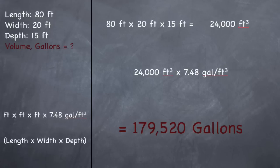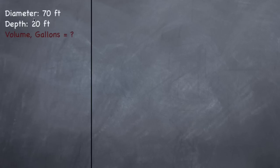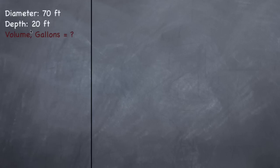Now let's do volume for a circle, like a clarifier. Anytime you see the word diameter or circumference, those are indicators of a circle. They've given a diameter of 70 feet — that's the length from one point of the circle all the way to the directly opposite point, essentially cutting the circle in half. It's operated at a depth of 20 feet, and we need to find the volume in gallons.